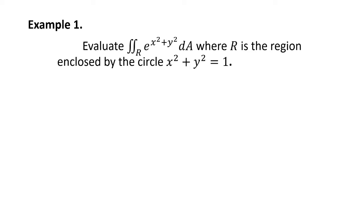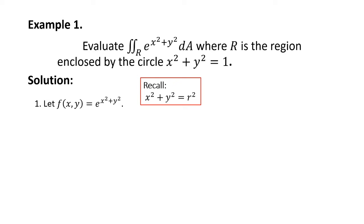For our first example, let's evaluate the double integral of e^(x² + y²) dA over R, where R is the region enclosed by the unit circle. So we'll have g(r, θ) equals e^(r²).